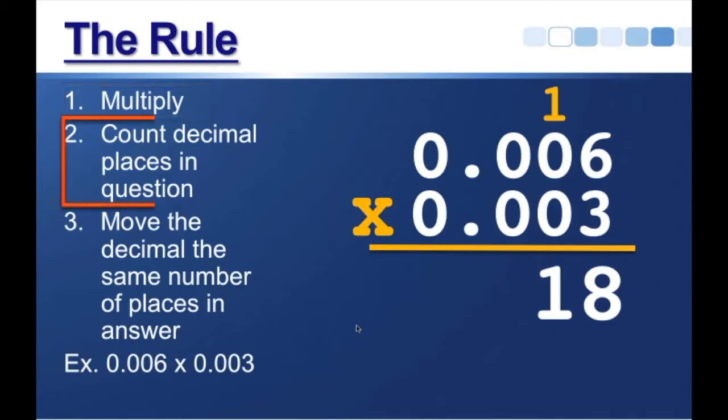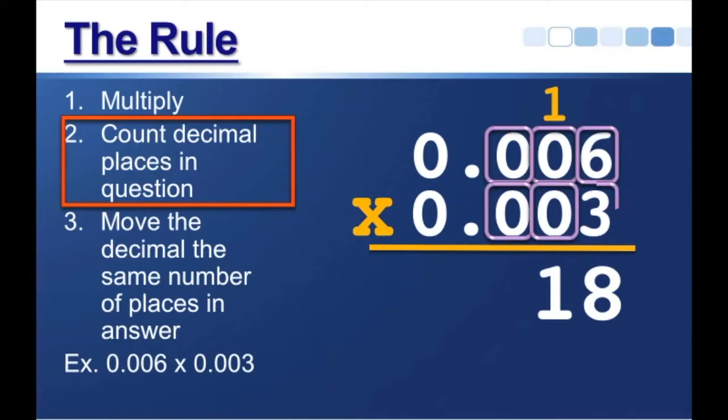Step 2. Count the decimal places in the question. We have 1, 2, 3, 4, 5, 6 decimal places. 6 decimal places in our question, which brings us to step 3.